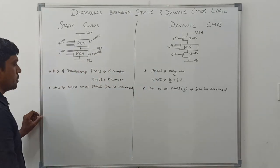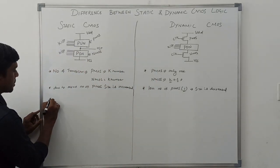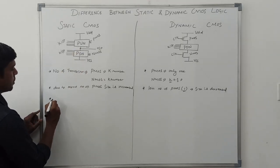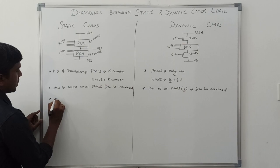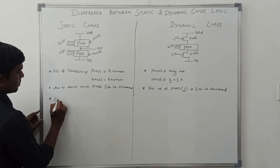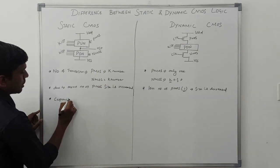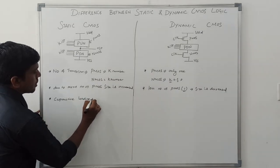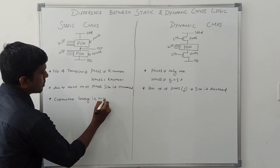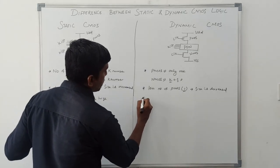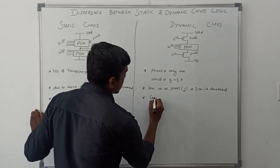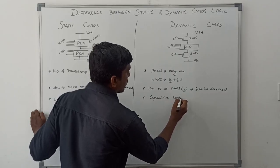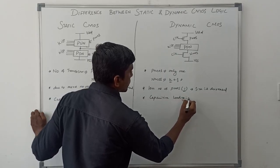The next point: due to the more number of PMOS transistors in static CMOS, the capacitive loading is high. In dynamic CMOS, the capacitive loading is less.